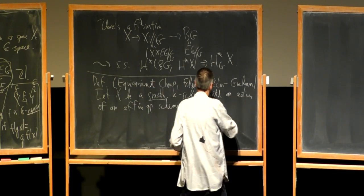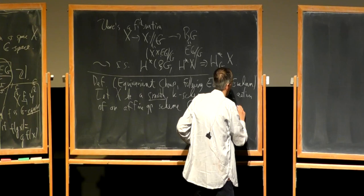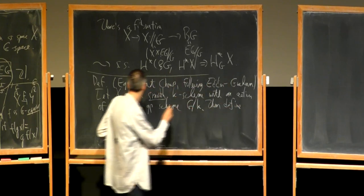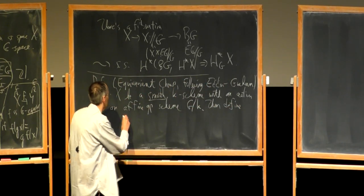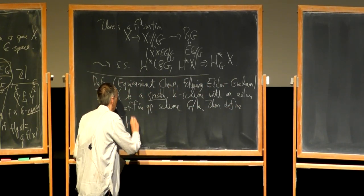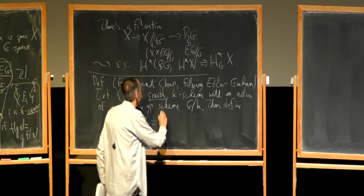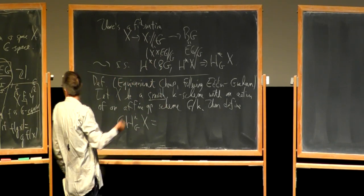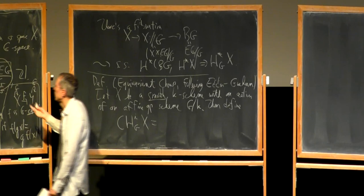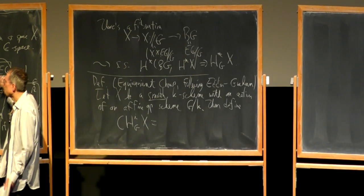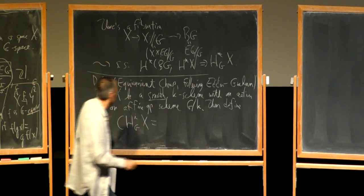In this situation, you can define the equivariant Chow groups of X with respect to the G-action by: Chow^i_G of X means the same thing as before, stated using only finite-dimensional approximations to BG — namely, you take X times (V minus S), an open subset of a representation, divided by G.